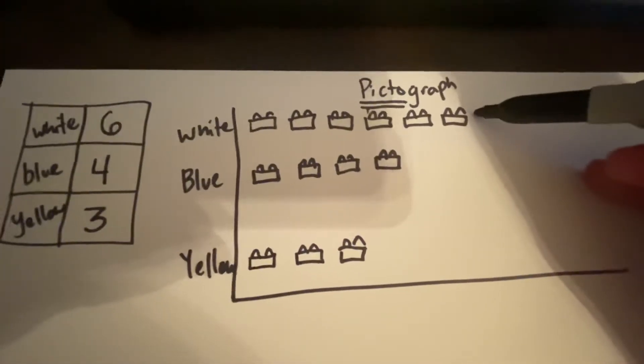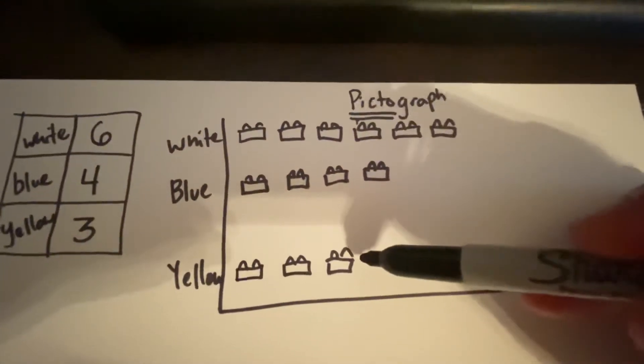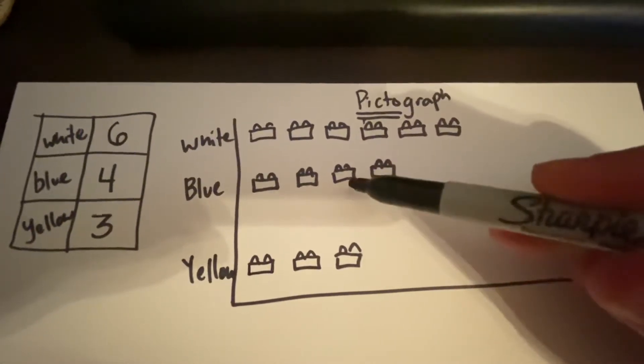Yep. There's six in the white. Which one do I have the least of? Yellow. Good. There's only three.